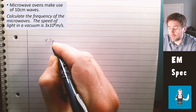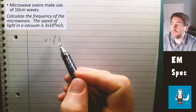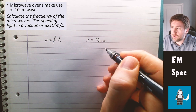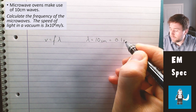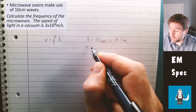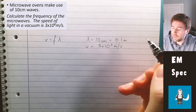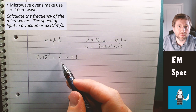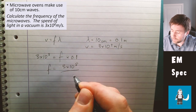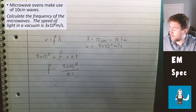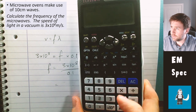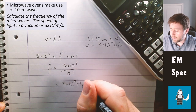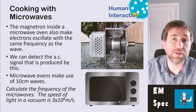As with every calculation, start by writing down the equation: wave speed equals frequency times wavelength. Then identify the data — we're given a wavelength of 10 centimetres, which we convert to SI units: 0.1 metres. The wave speed is 3×10⁸ m/s. Substitute into the equation and rearrange for frequency by dividing: frequency equals wave speed divided by wavelength, which gives 3×10⁹ Hz. Our unit is hertz.